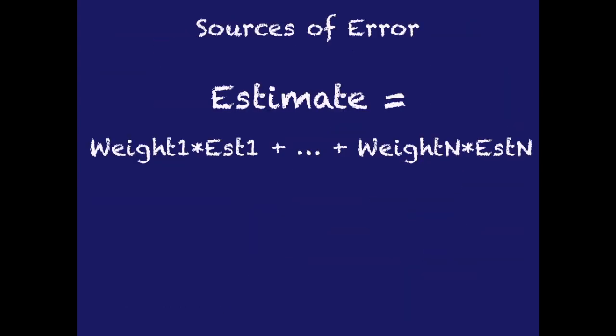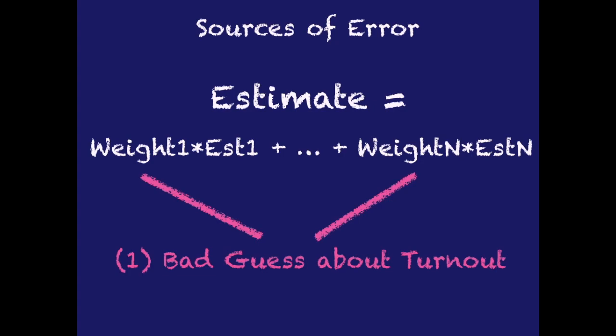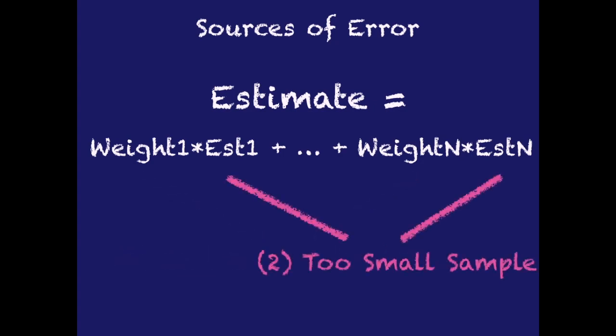Every estimate is going to have two sources of error: you might have a bad guess about turnout, or you might have too small of a sample size. Modern opinion polls can best be described as confidently wrong. We can reach a very large number of people inexpensively, driving down the margin of error — but the problem is, are those the people who are actually going to turn out to vote? The weights we use to construct an estimate are bets based on historical demographic trends at best, and shameless optimism from campaigns at worst.